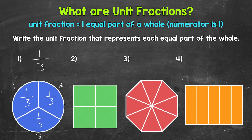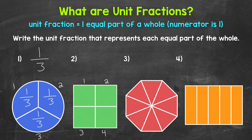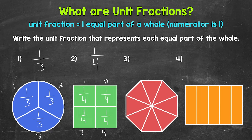Let's move on to number two. What unit fraction represents each equal part of the whole? We have one, two, three, four equal parts. The whole square has been divided into four equal parts, so four is going to be our denominator. Each equal part is one out of four total equal parts, so this is one-fourth of the whole. One-fourth is the unit fraction that represents each equal part of the whole.